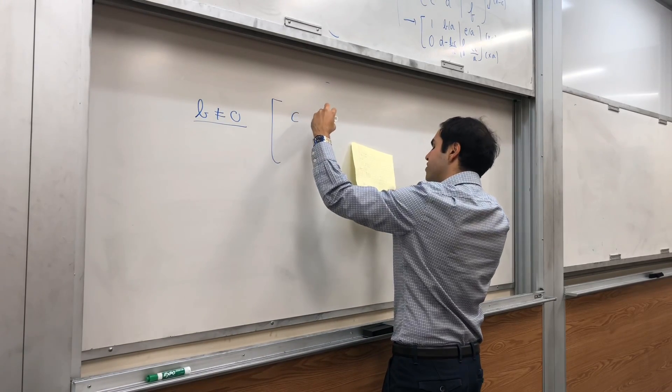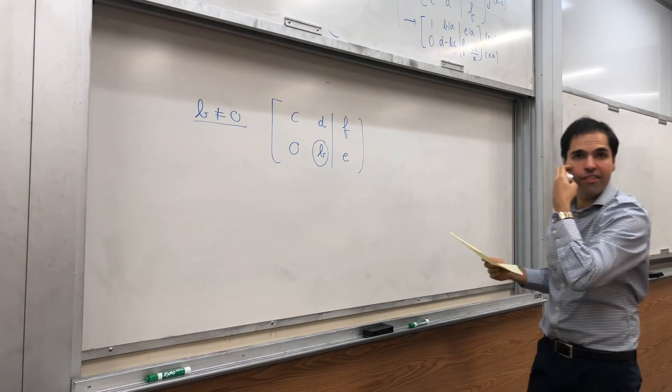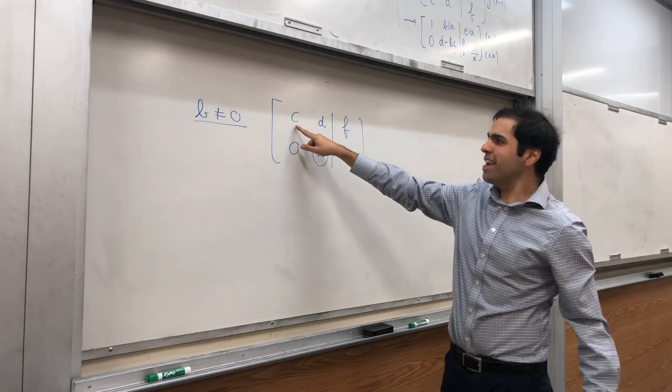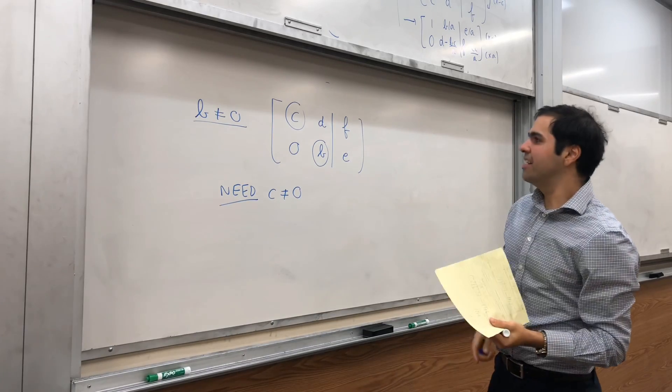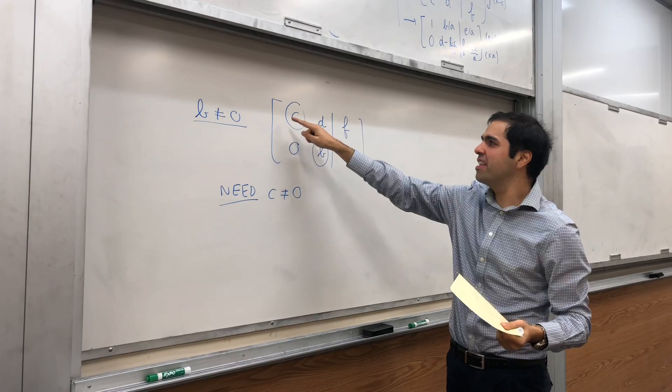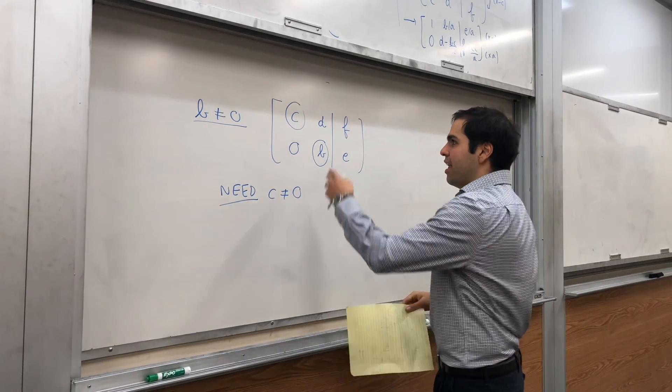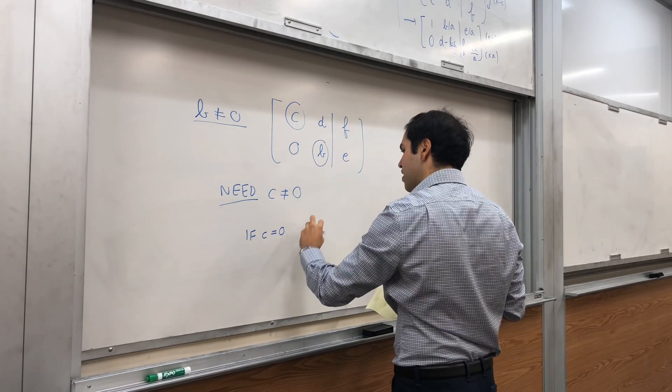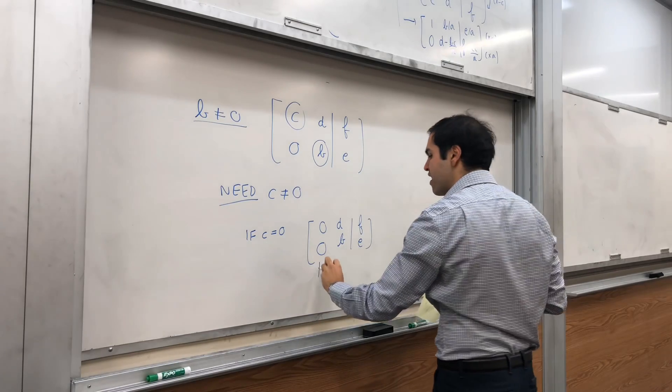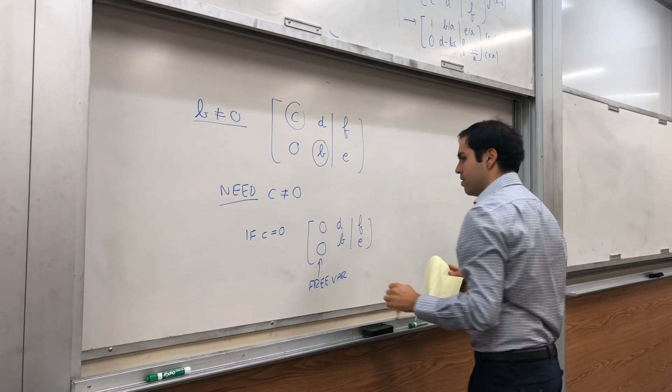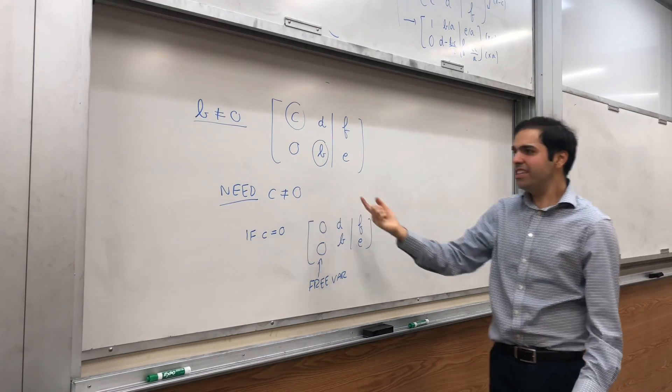And now let's argue if b is non-zero. Then what we get is CDF, 0BE. Well, if b is non-zero, then this is a pivot, and basically, we need c to be non-zero. Here's why: because if c is non-zero, then we're good, c becomes a pivot, and we have a pivot in every row, and a pivot in every column, which means there's a unique solution. If c is 0, then we'll get something of the form 0, 0, and there would be a free variable here, which means there might either be no solution, or infinitely many solutions. So, that's why we need c to be non-zero.